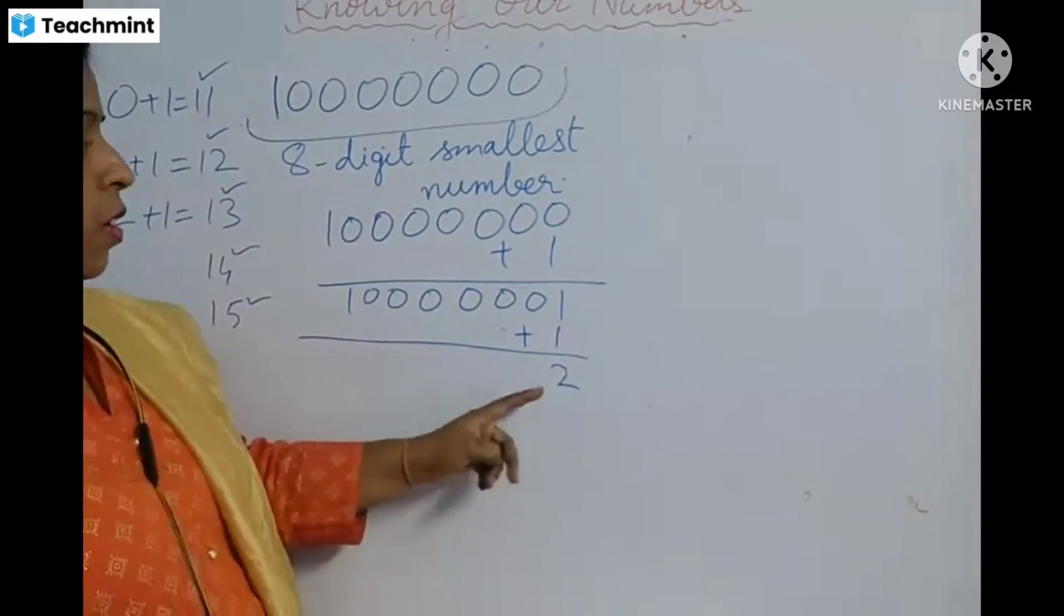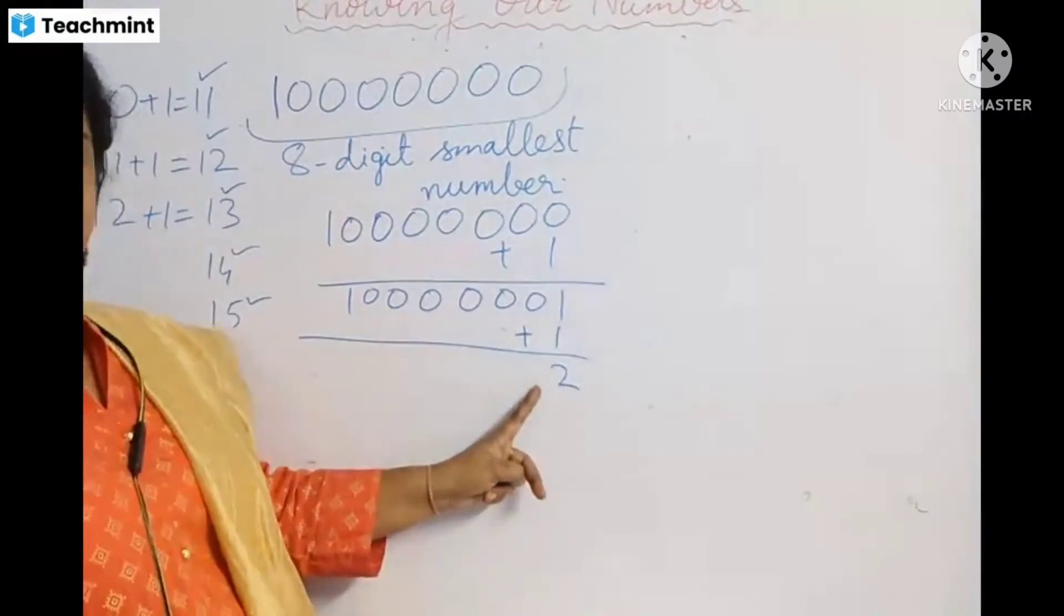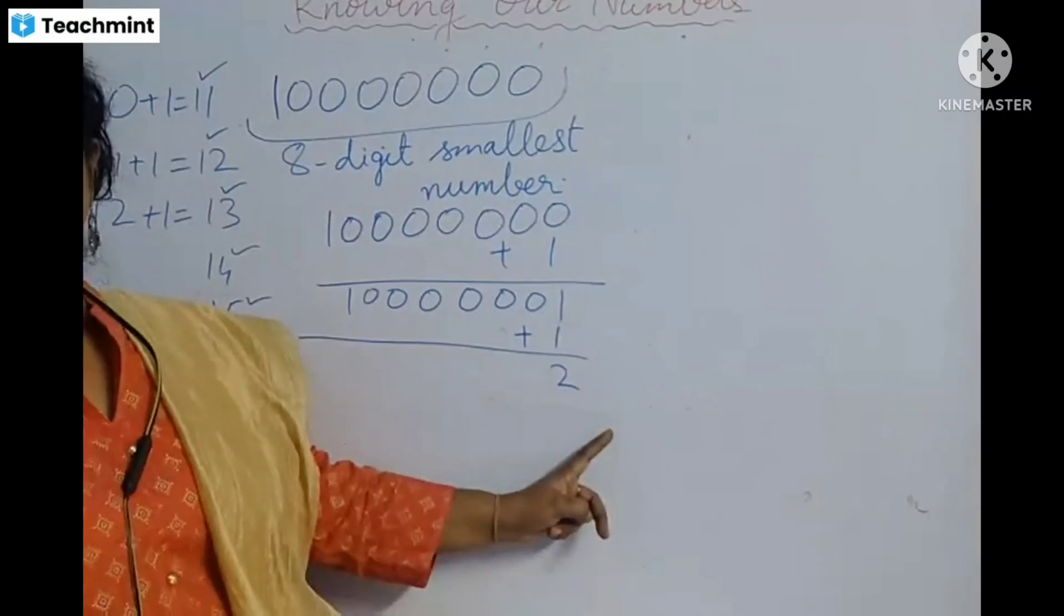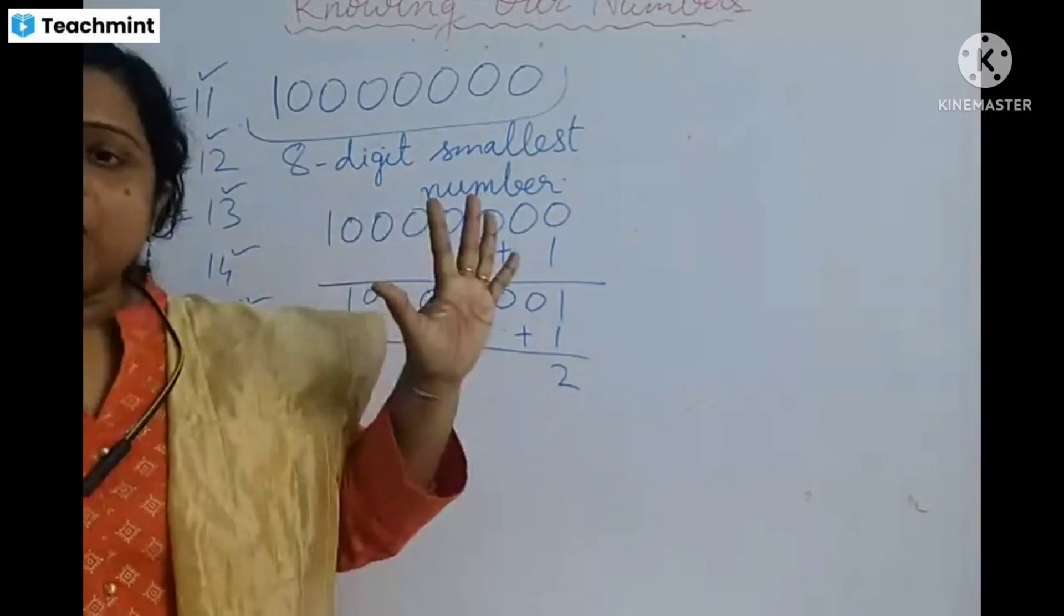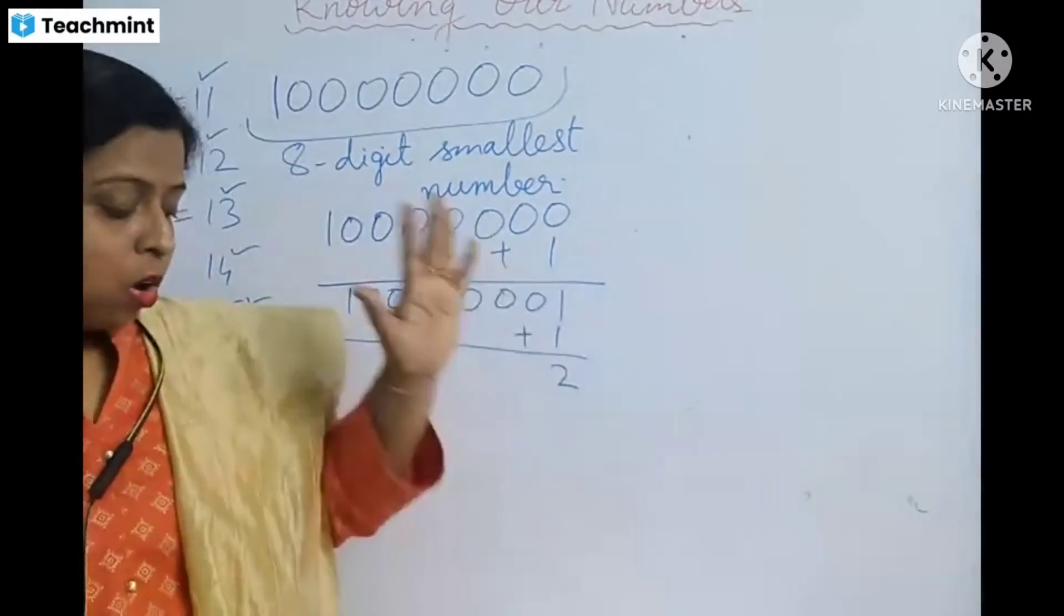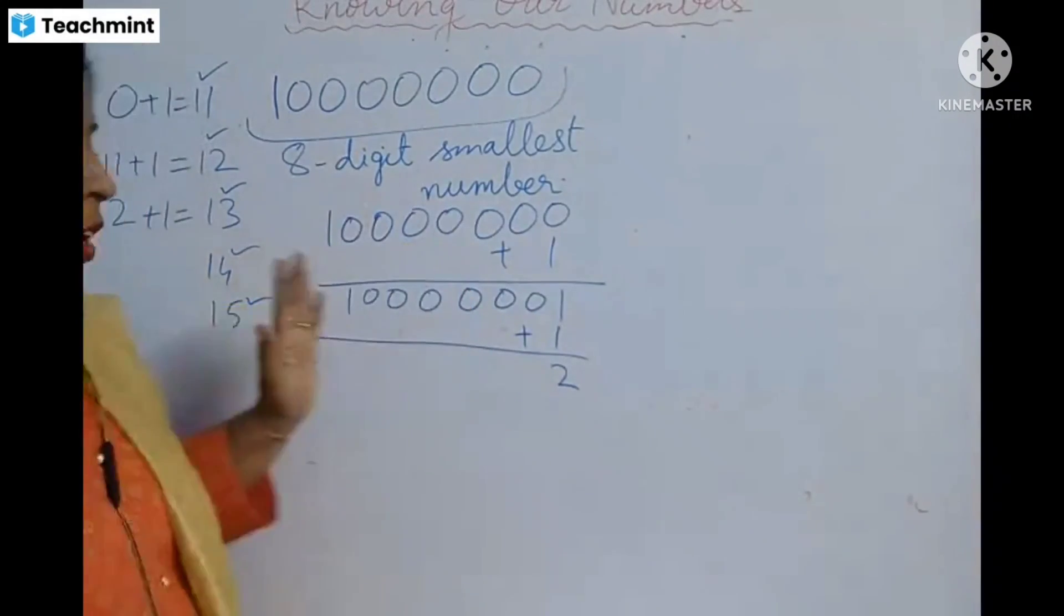Third number you have to find out. And like this you have to find out 5 numbers. Next 5 numbers find out.